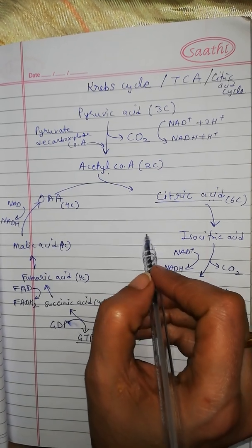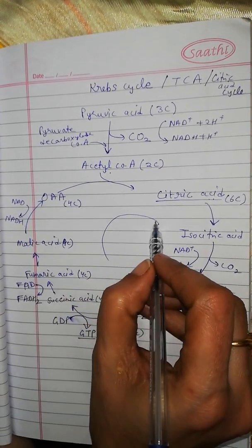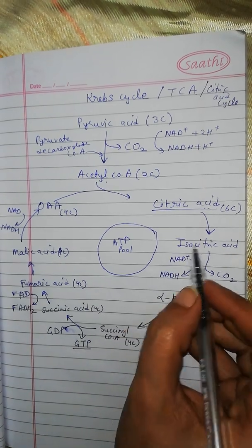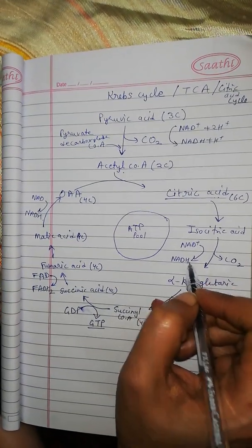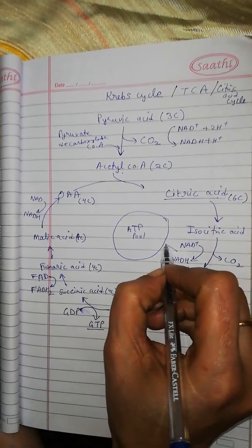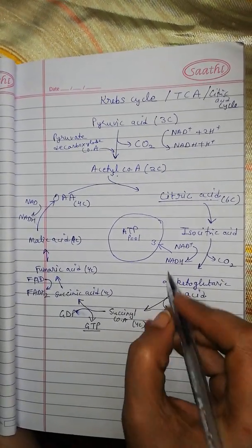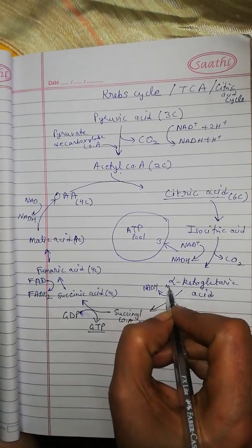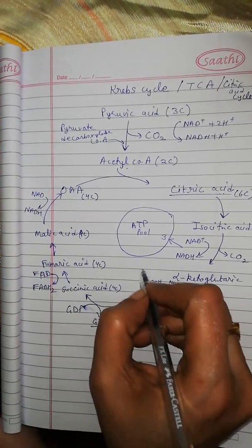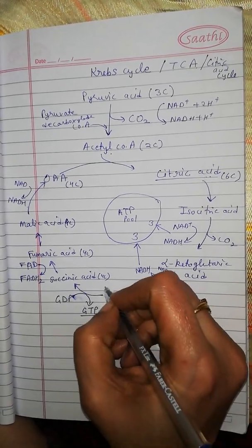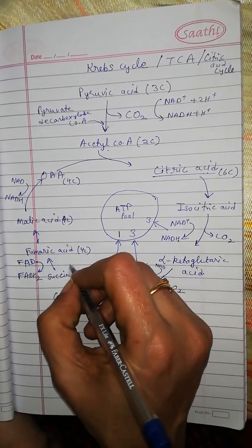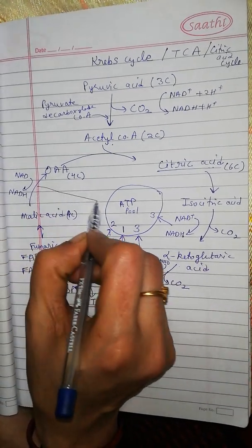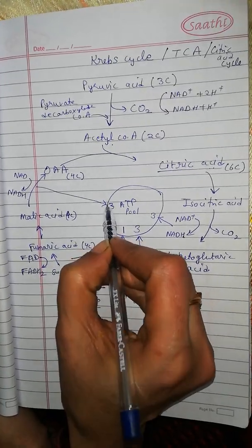If we see the number of ATP molecules formed as a result of Krebs cycle — making an ATP pool — one NADH molecule is equivalent to three ATP molecules, so three ATP molecules are generated. When there occurs decarboxylation, NAD is reduced to NADH, so that NADH is also equivalent to three ATP molecules. The GTP is equivalent to one ATP, and one FADH2 molecule is equivalent to two ATP molecules.